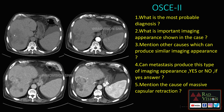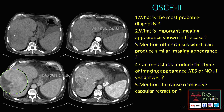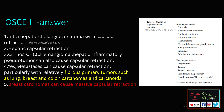Moving to the second OSCE: here you can see a heterogeneously enhancing mass lesion noted in the right lobe of the liver with significant capsular retraction. This is the classical imaging finding — capsular retraction in the right lobe of the liver. The diagnosis is intrahepatic cholangiocarcinoma with capsular retraction, and the classical imaging finding is hepatic capsular retraction.